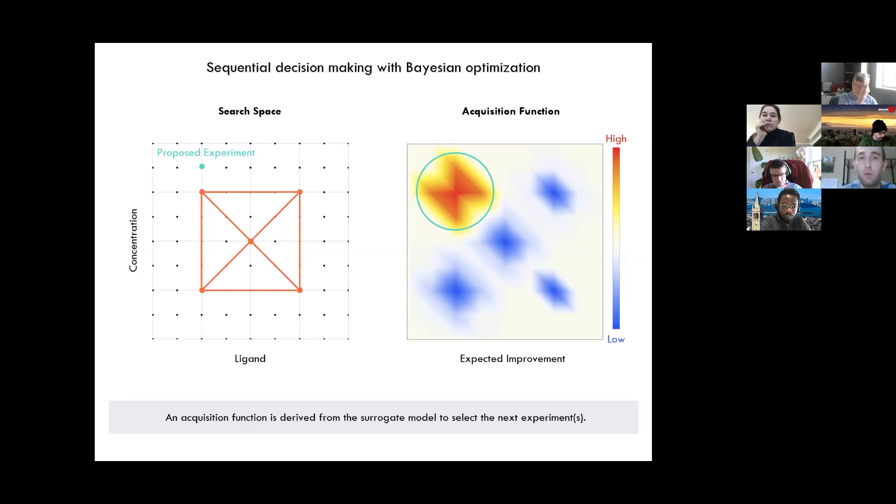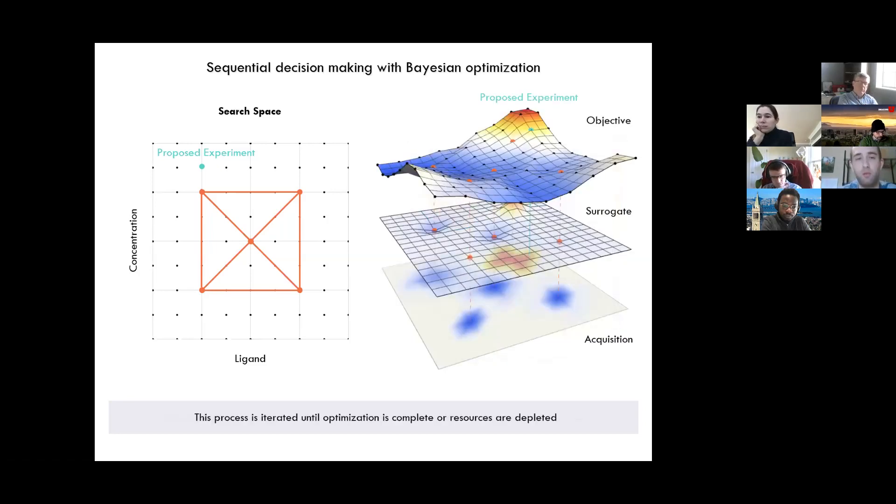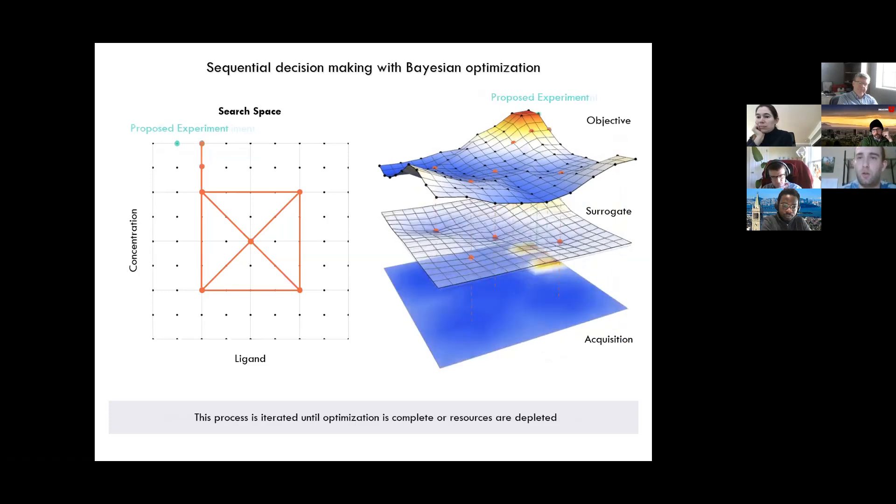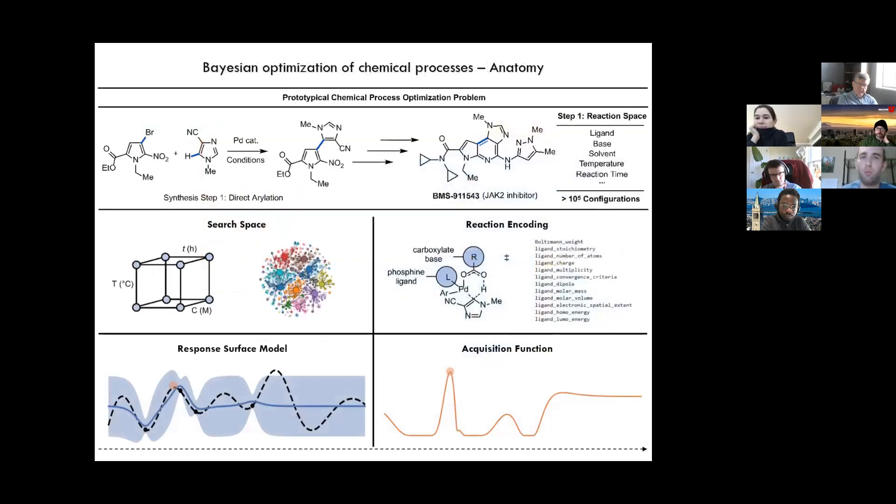And then we just go into the lab and rerun that experiment. And we kind of iteratively continue this process, collecting data, fitting the model, optimizing the acquisition function, ultimately until we either sort of run out of resources or time, or we hit an optimal value. And in yield optimization, this is nice because, you know, once we get close to quantitative yield, we know that we can sort of maximize the value and hit a global value.